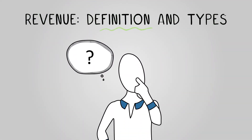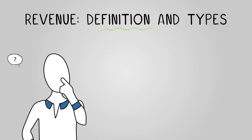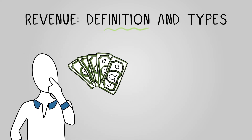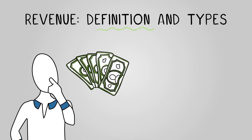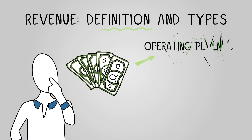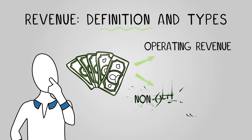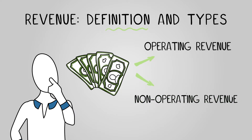What exactly is revenue? Revenue is the money your business earns from selling its products or services. There are actually two types of revenue you need to know about: operating revenue and non-operating revenue.